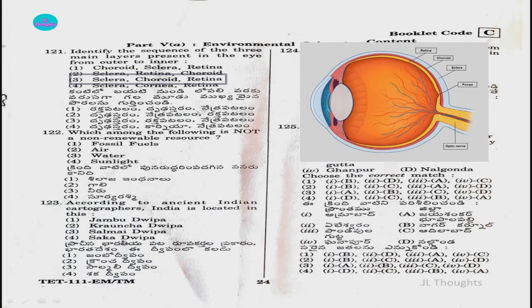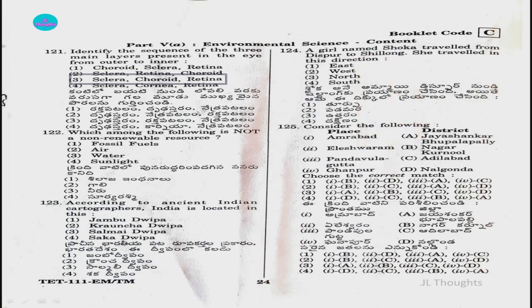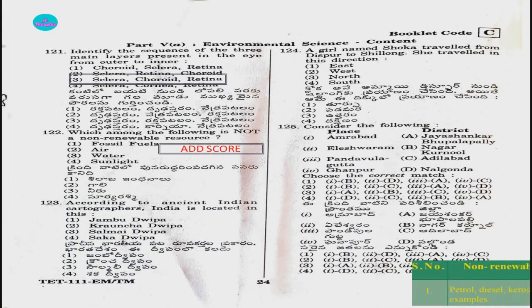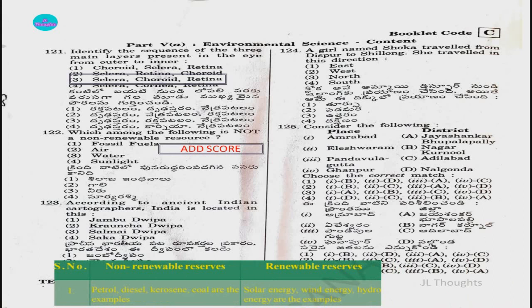Question number 122: Which among the following is not a non-renewable resource? The options are fossil fuels, air, water, and sunlight. There is a mistake in this question, so an ADD score was given. Non-renewable examples include petrol, diesel, kerosene, and coal. Renewable examples include solar energy, wind energy, and hydro energy. That is why ADD score was given.